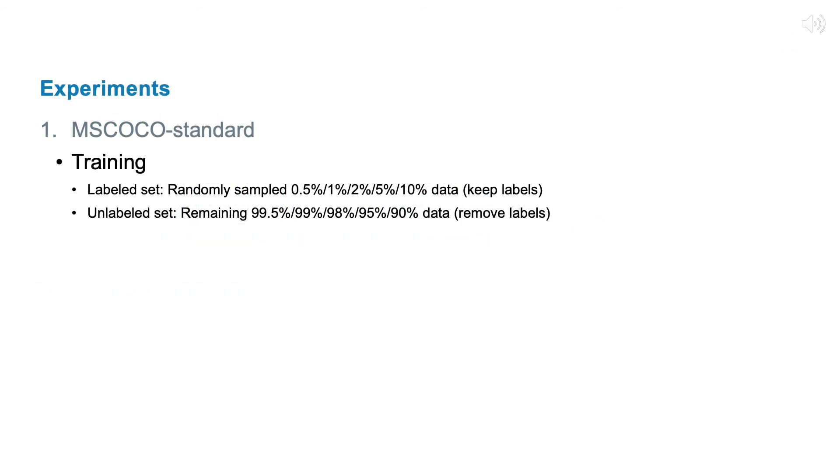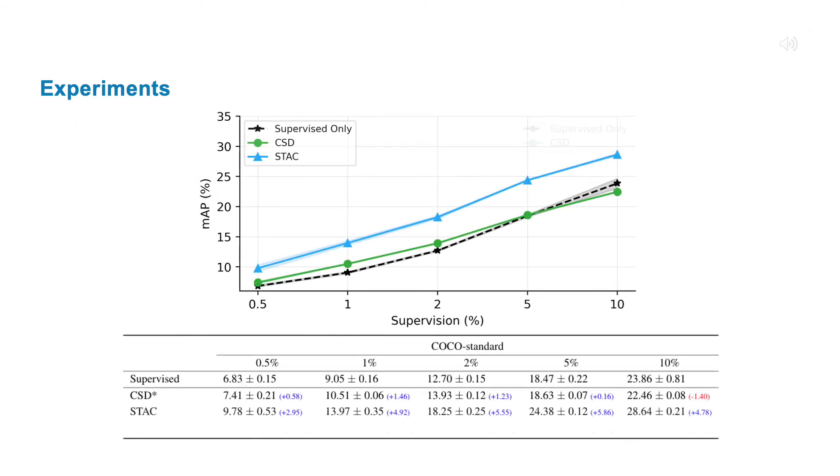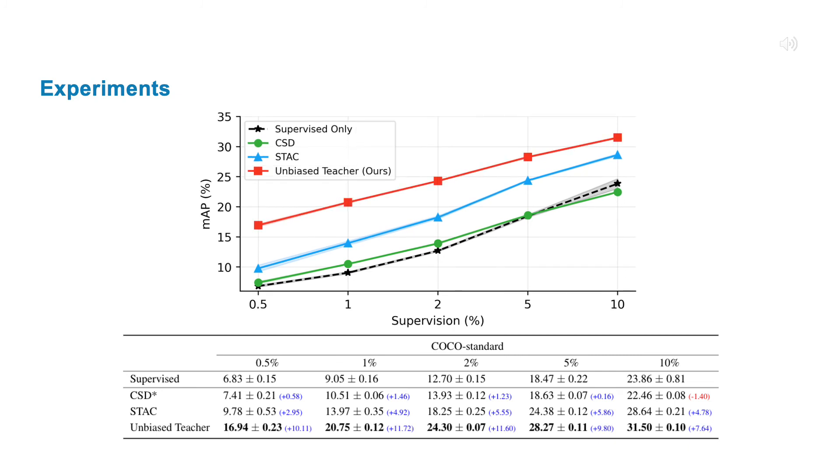In the first experiment, we tested our Unbiased Teacher on MS COCO standard task, where only 0.5% to 10% data are labeled. By addressing the pseudo-labeling bias issue in object detection, our Unbiased Teacher can improve around 10 absolute AP against supervised-only baseline and significantly outperform other baseline methods.